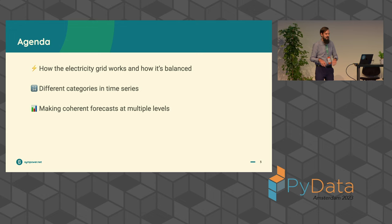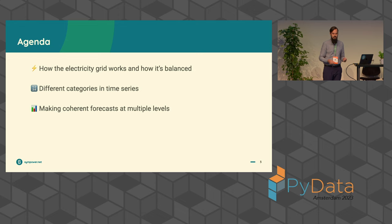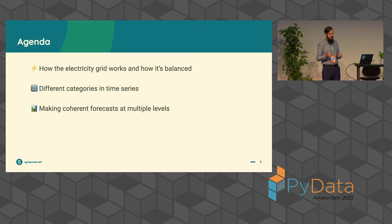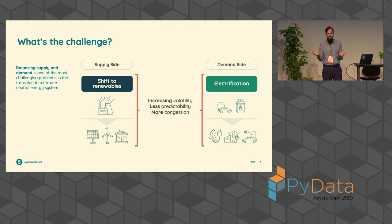The agenda for today is going to be three parts — every good presentation has three parts. First, a little bit of a primer about the electricity grid and all the things that you don't think about when you put your plug into the power socket. Then something about the different kinds of time series that we're facing and how you can reason about what kind of time series you're dealing with. And then forecasting at different levels and how you can have reconciled or coherent forecasts across those. So let's start with the primer.